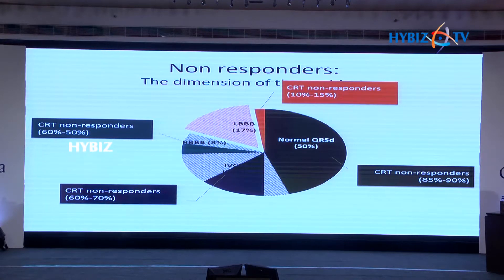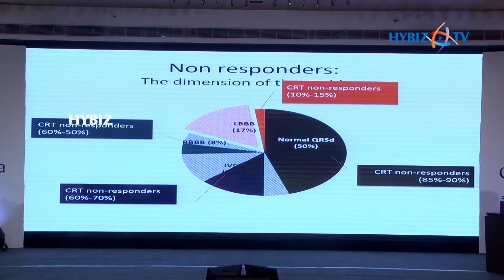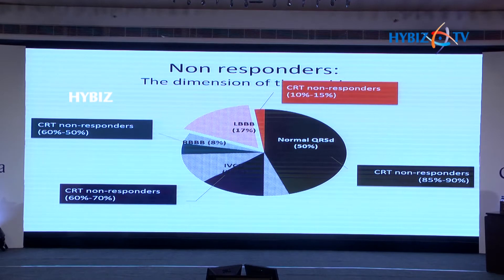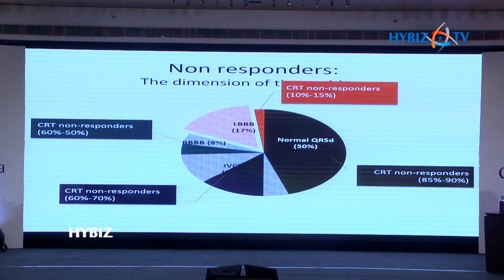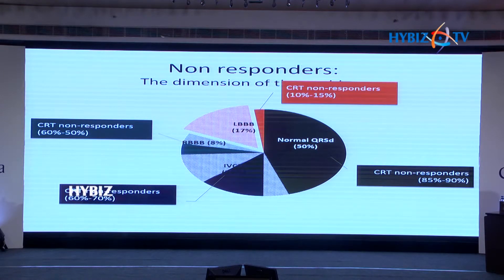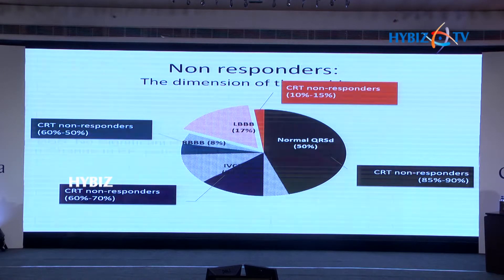Why is there such heterogeneity in clinical response among non-LBBB morphology patients? If you take patients with an LBBB morphology, the moment the left bundle is blocked there is a unifocal spread from the septum to the lateral wall, and anywhere along the lateral wall if you place a lead, the LBBB is more forgiving — whether you put it in an anterior, posterior, or mid-lateral vein, you will still have benefit.